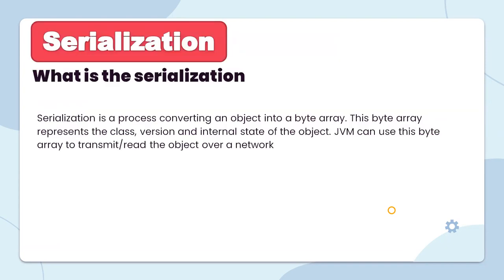What is serialization? Serialization is the process of converting an object into a byte array. This byte array represents the class, version, and internal state of the object. The JVM can use this byte array to transmit or read the object over the network.